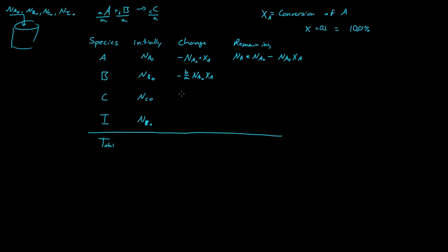The same is true for C, except it's positive, because C is being actually generated, so it's C over A, N A naught X A. So for every mole of A that is consumed, we have C over A moles of C being generated. So that's why it's positive, no longer negative.